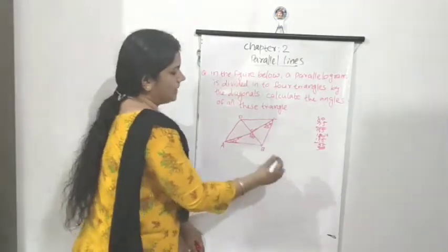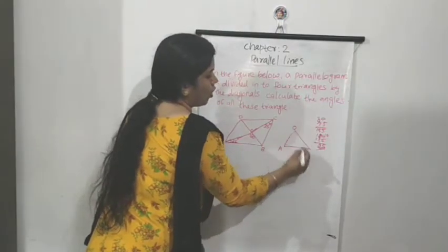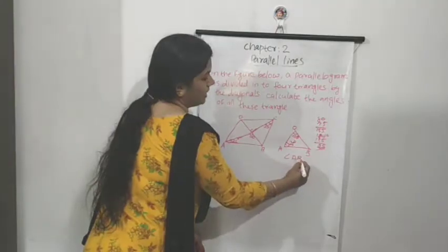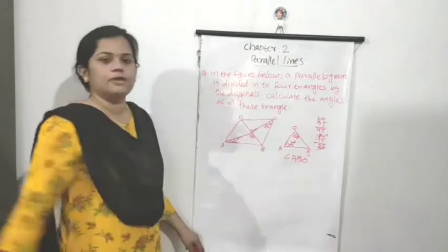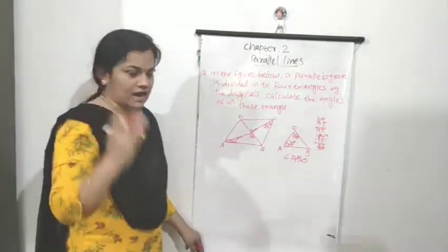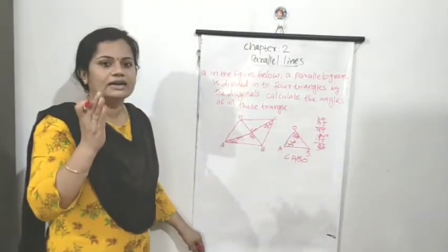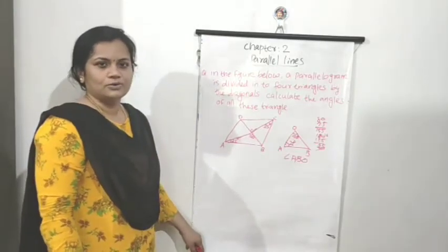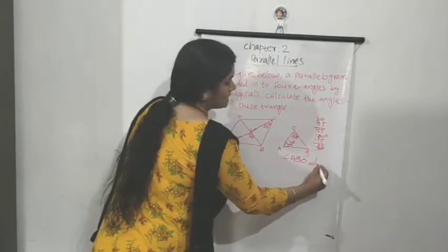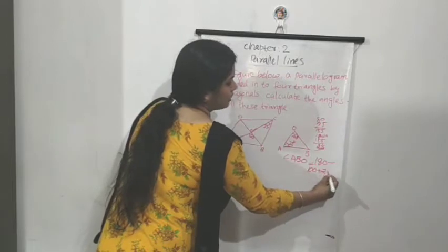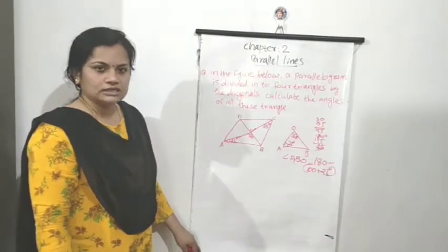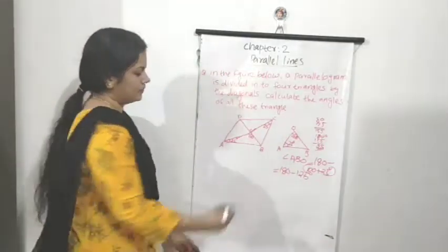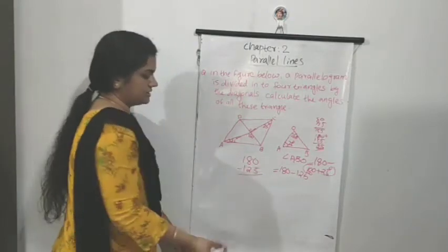Consider triangle AOB. Angle A is 25 degrees and angle O is 100 degrees. We want to find out angle B. Since a triangle has three angles with a total sum of 180 degrees, and two angles are already given, we find the third angle: 180 minus (100 plus 25) equals 180 minus 125.